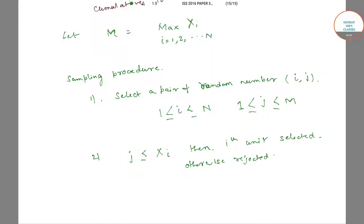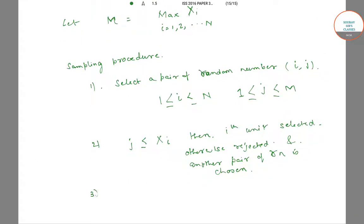Another pair of random numbers is then chosen, and we continue this process until we get a sample of size n.